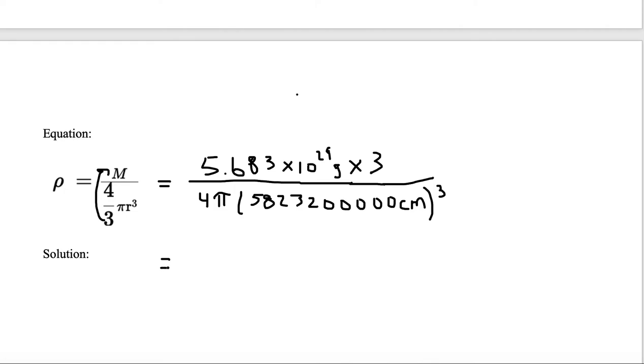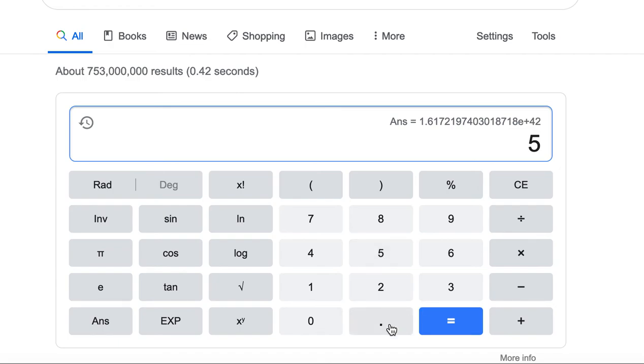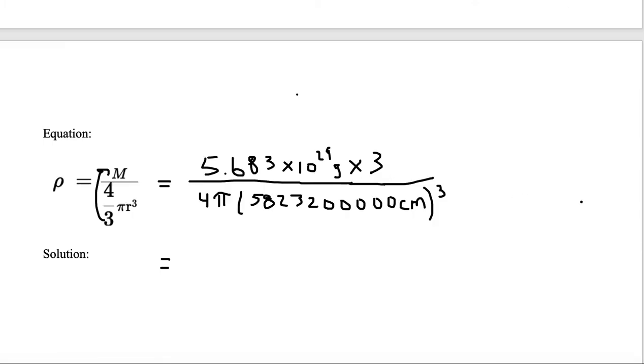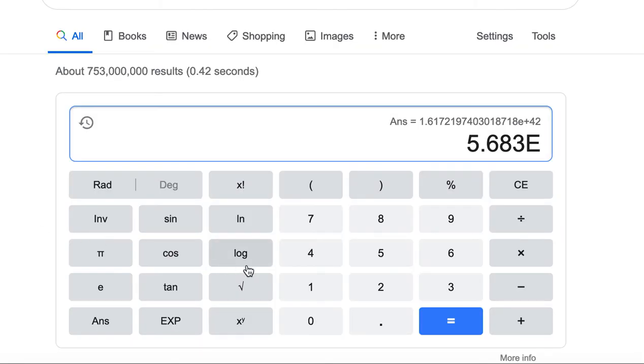So let's go ahead and multiply this out. First thing we need is 5.683. So you type in your Google calculator, 5.683 EE, and it is 29, and then you need to multiply by 3. Then you need to divide by 4 and divide by pi.